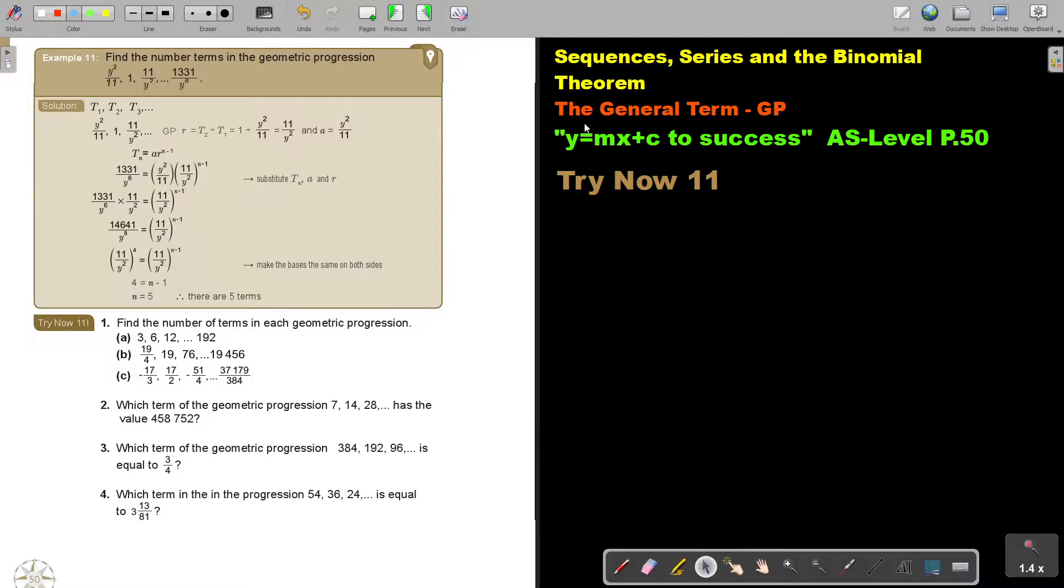In this video, we are going to continue with the general term of a GP. You will find this on page 50 in the Namibia AS Level Mathematics textbook, Y equals MX plus C to success.